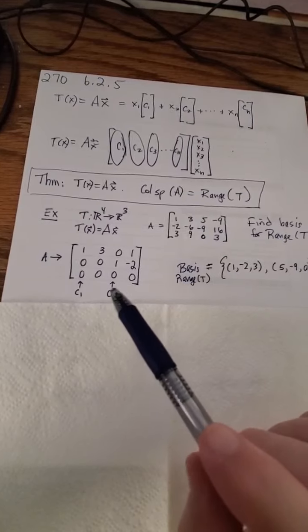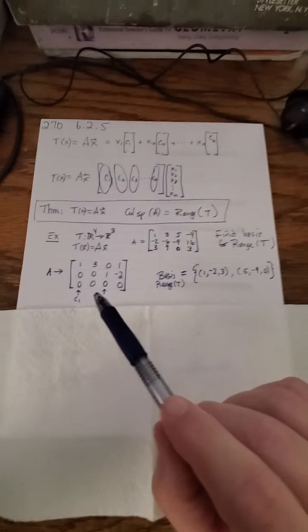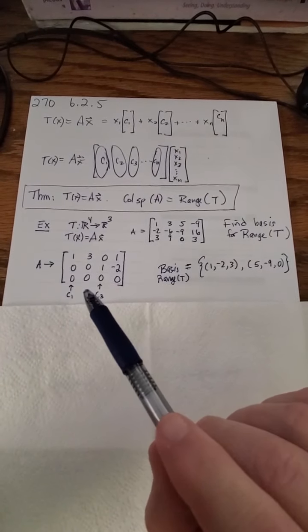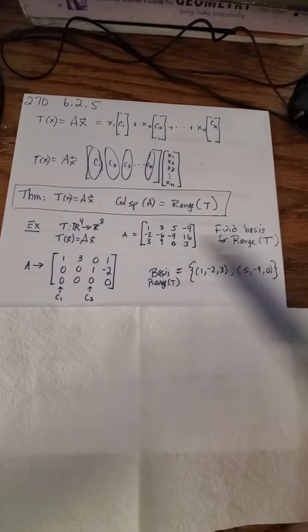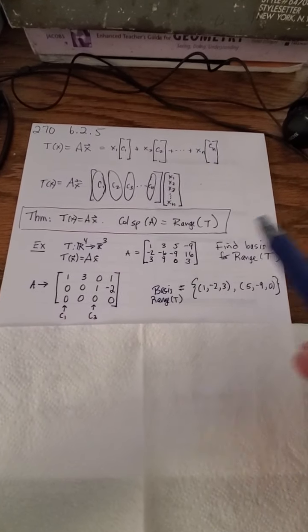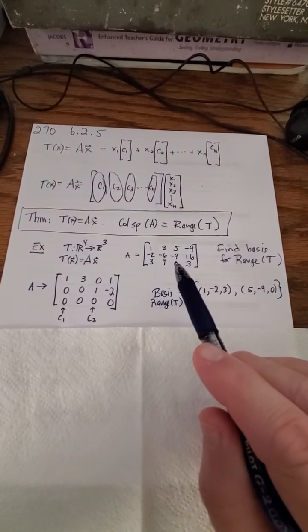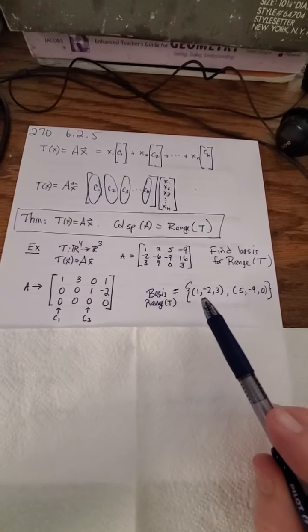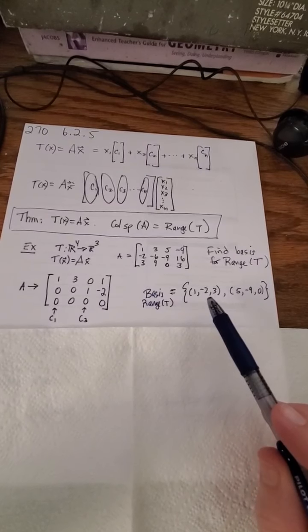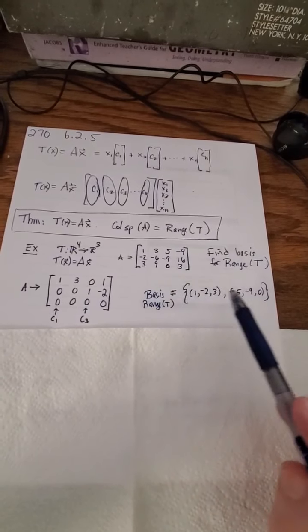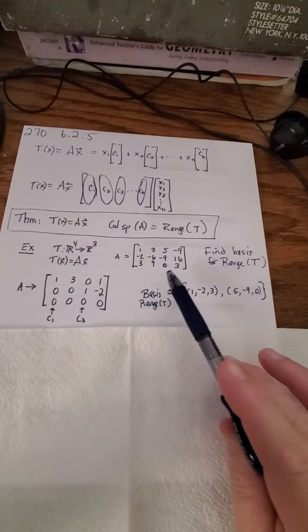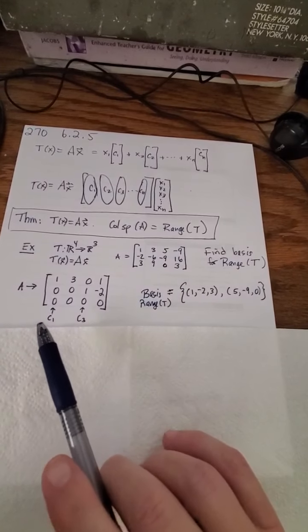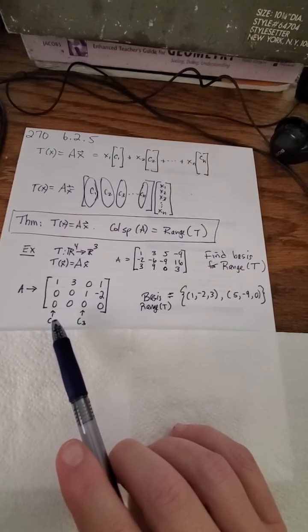Well, column one and column three would be the linearly independent columns, which means that column one and column three of my original matrix A is going to be the basis of my kernel. So that's one, negative two, three—that's the first column, one of the original—and five, negative nine, zero—that's column three of the original. So I see the columns that contain leading ones, and those columns tell me which columns of the original matrix are the columns that form the basis.